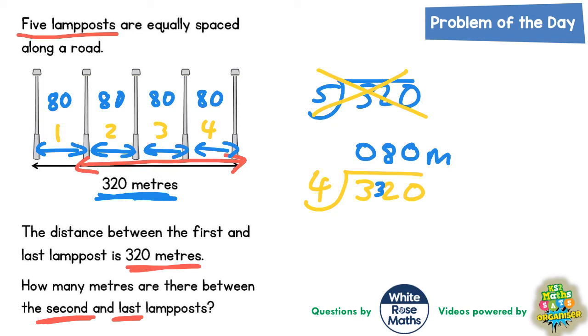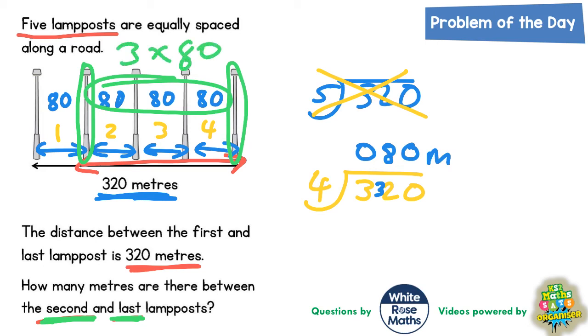Now let's read the question again: how many meters are there between the second and last lamppost? Well, this is the second lamppost, this is the last lamppost, so how many meters between them is these three lots of 80 here. We need to work out 3 times 80.